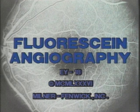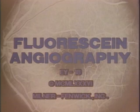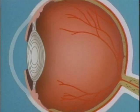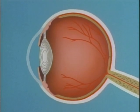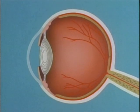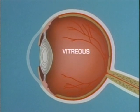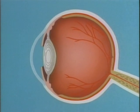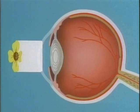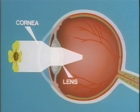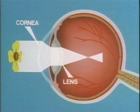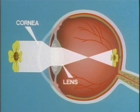In order to understand fluorescein angiography, it is important that you be familiar with the anatomy of the eye. Most of the eye cavity is filled with a jelly-like substance known as vitreous. To see an object, light passes through the cornea, lens and vitreous and is focused on the rear wall of the eye, called the retina.